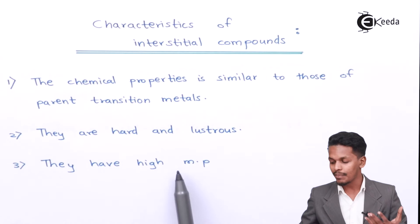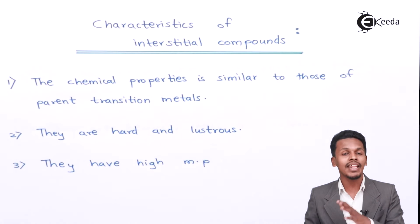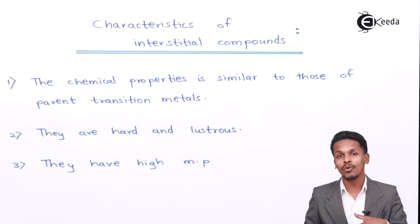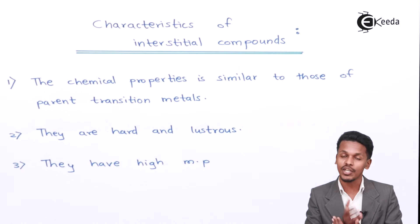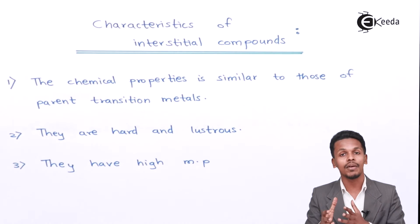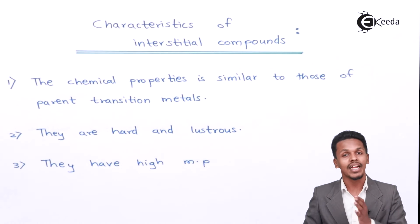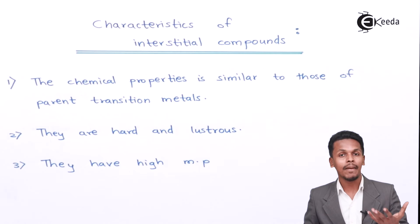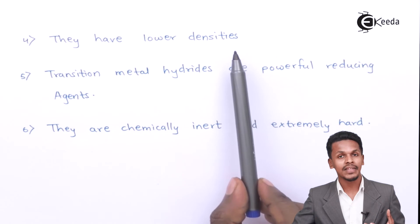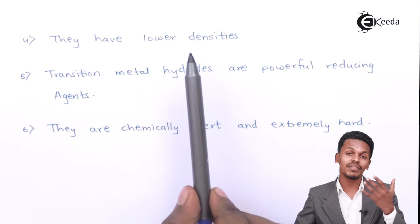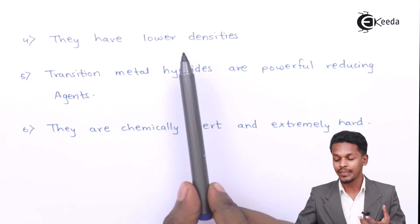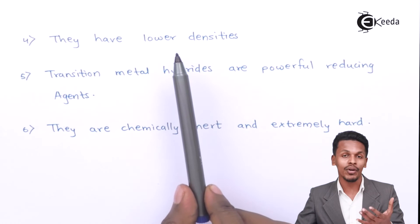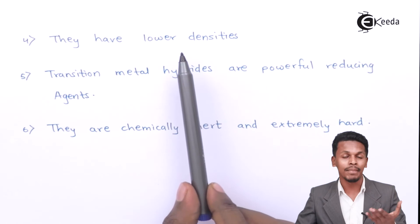They have higher melting and boiling points. The reason is that while metal-metal bonds are strong, in interstitial compounds the bond between the non-metal and the metal is even stronger, requiring more energy to break. This gives interstitial compounds higher melting and boiling points than the parent metal. They also have low density compared to the parent metal, yet high bonding strength between metal and non-metal.